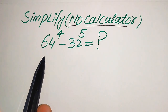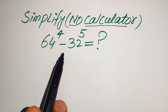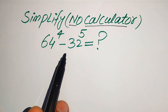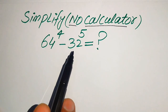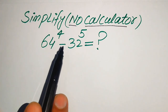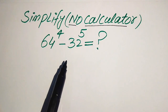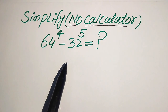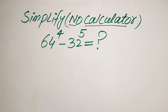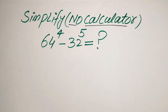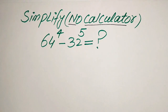So, if we have 64 to the power of 4 minus 32 to the power of 5, we write this algebraic expression into the lowest form. I hope you like this method, but if you have any other method in your mind, please don't hesitate to write it into the comment section.